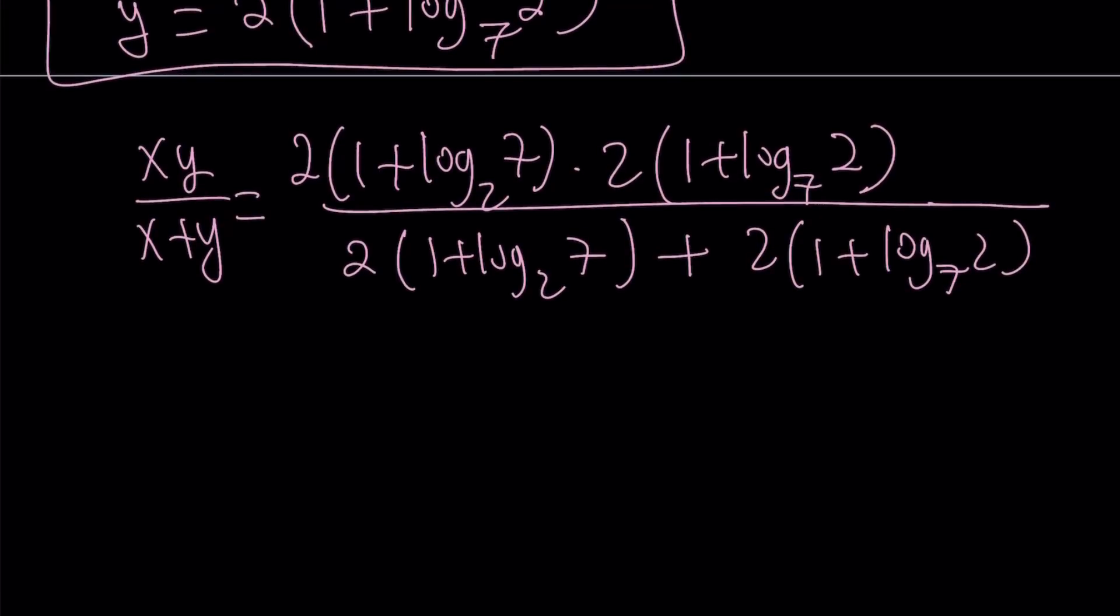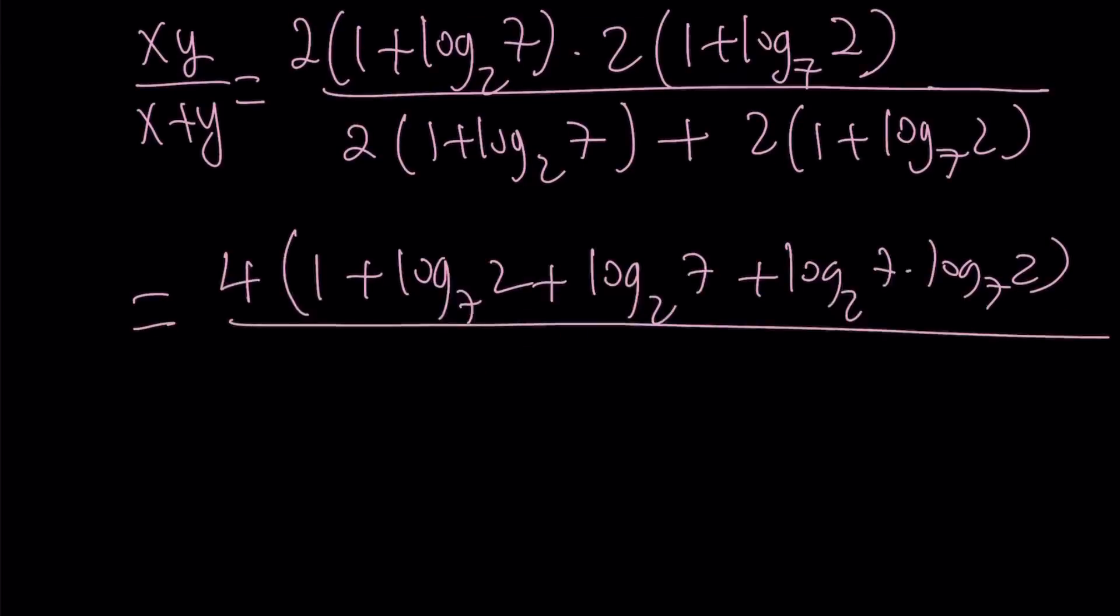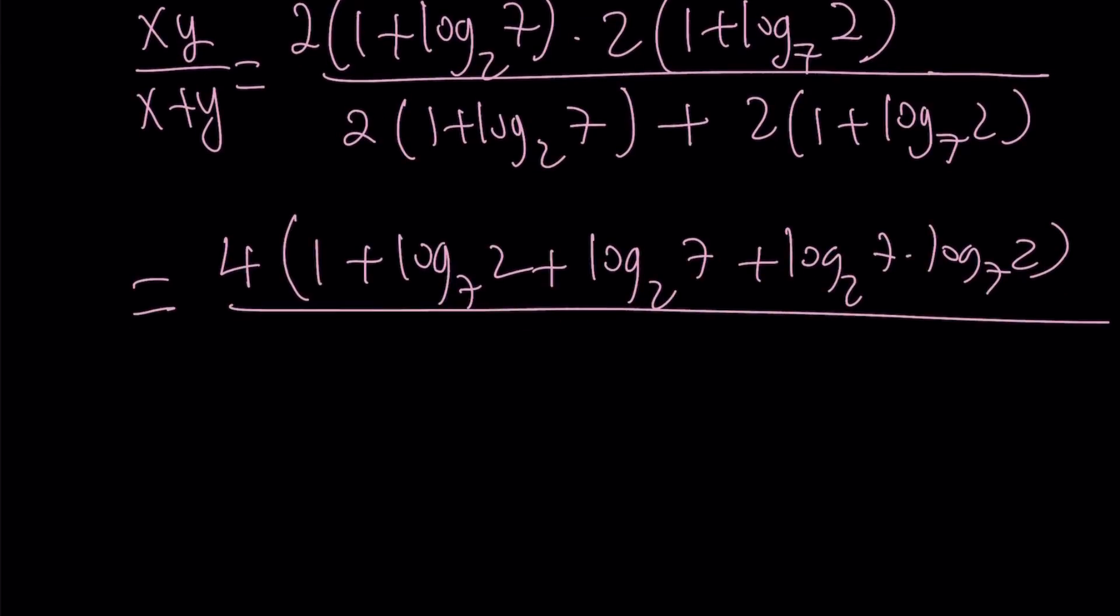When you multiply the top and the bottom, well, first of all, let's do across the top. You're going to get 2 times 2 equals 4. And now we're just going to go ahead and write it like this. And what I can do is I can actually go ahead and distribute this. So why not do that right now? So let's go ahead and distribute. We're going to get 1 times 1, 1 times log 2, 1 times log 7, and then log 2 times log 7, and log 7 times log 2. I'll tell you what it is in a little bit. That's a common identity.